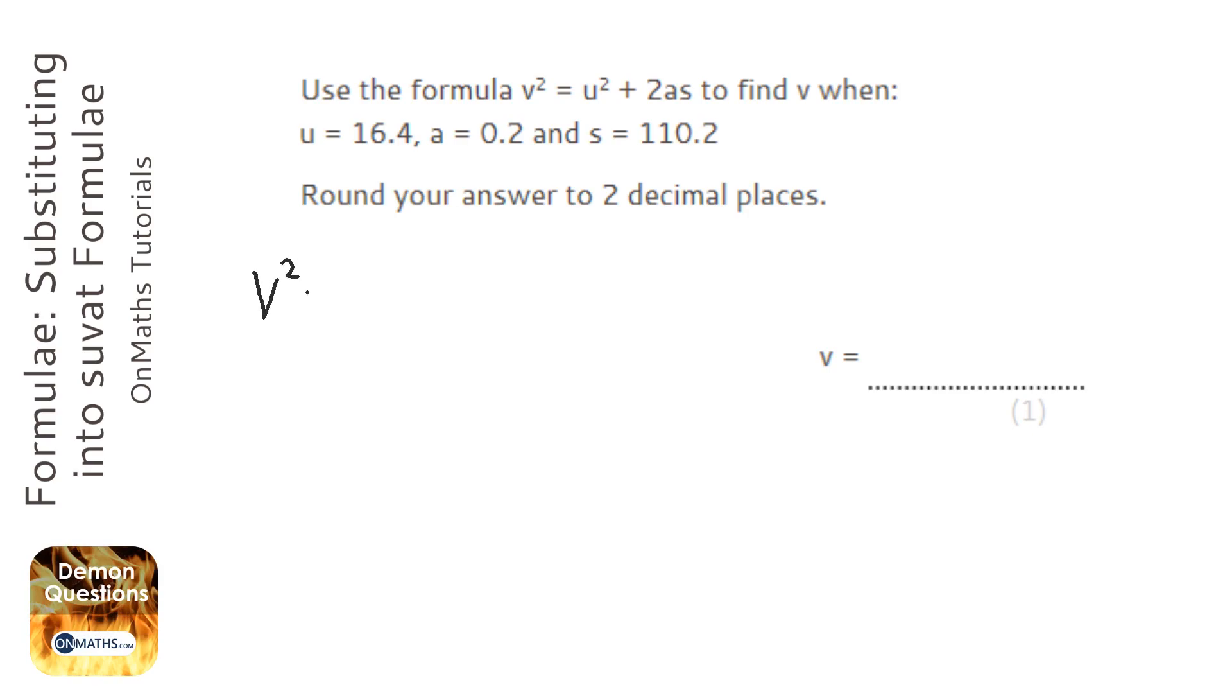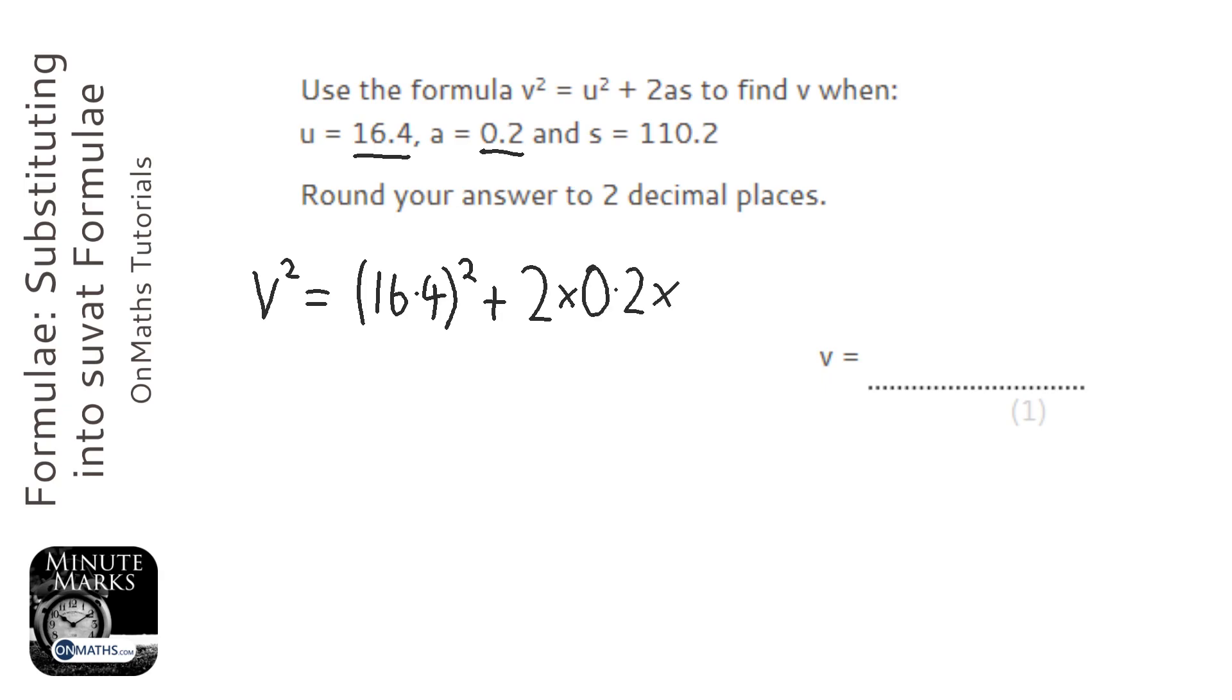So it says v squared equals u squared, so u is this number here. So I'm doing 16.4 squared plus 2 times a, which is 0.2, times s, which is 110.2.